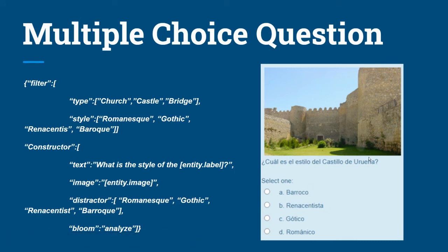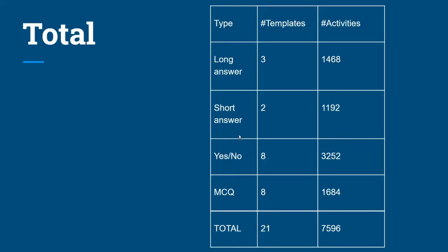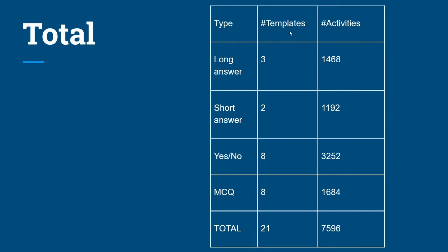Here's an example of one of these resulting tasks. Here you have a summary of the amount of tasks created: with 21 templates we obtained almost 7,600 tasks. You can see a list of Moodle activities — what we call tasks — generated from each template. The effort of creating these templates is much lower than the effort of creating this large amount of activities, which is one of the main advantages of this approach.